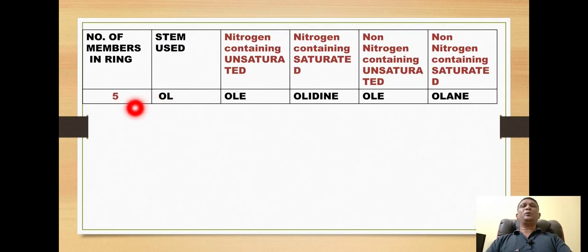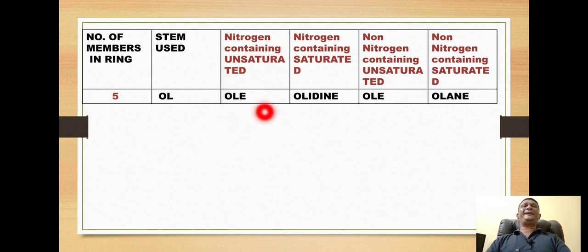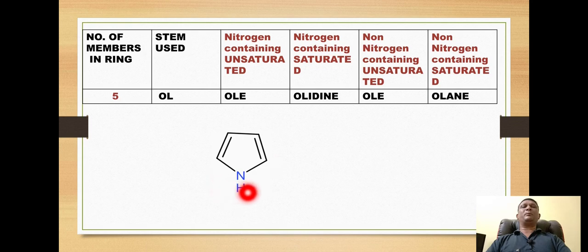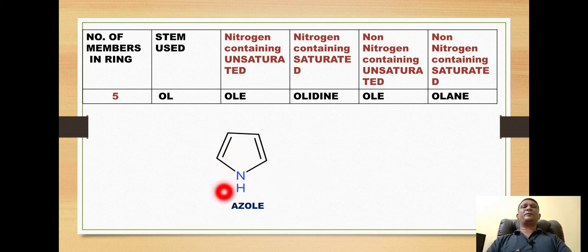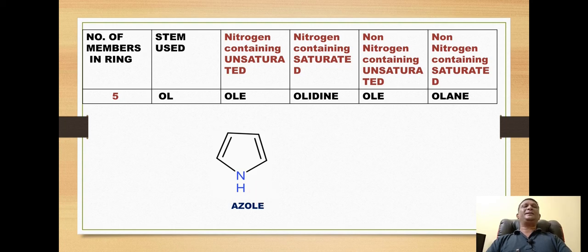For five-membered rings, we use the stem 'ol'. If the ring is nitrogen-containing and completely unsaturated, we use the suffix 'ole'. For example, a five-membered, completely unsaturated nitrogen ring uses the prefix 'aza' and suffix 'ole', giving the name 'azole'. This azole ring is commonly called pyrrole.